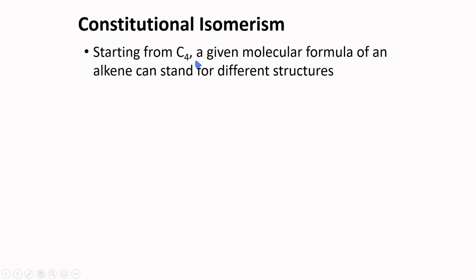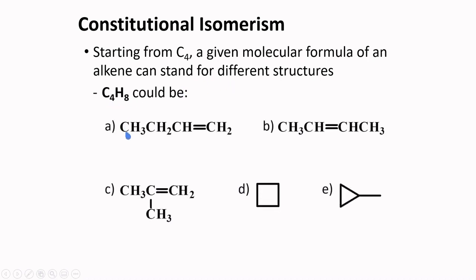Starting from C4, a given molecular formula of an alkene can stand for different structures, giving different isomers. C4H8 could be all of these compounds. Considering the alkene types, A and B are position isomers — the double bond is at different positions. A and C are chain isomers — they have different connections of atoms with respect to the main chain. A, B, and C are considered functional isomers of D and E, because D and E belong to a different compound family: they are cycloalkanes.